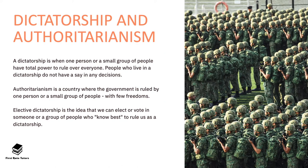This is of course the opposite of a dictatorship and an authoritarian government. A dictatorship is when one person or a small group of people have total power to rule over everybody, and the people living in a dictatorship do not have a say in decisions, don't get to choose who leads them, and don't get to choose the laws implemented. Authoritarianism is very similar — a country ruled by one person or a group with very few freedoms. There is also a form called an elective dictatorship, where citizens elect a person or tiny group who then rule as a dictator without consulting the people on laws or decisions.